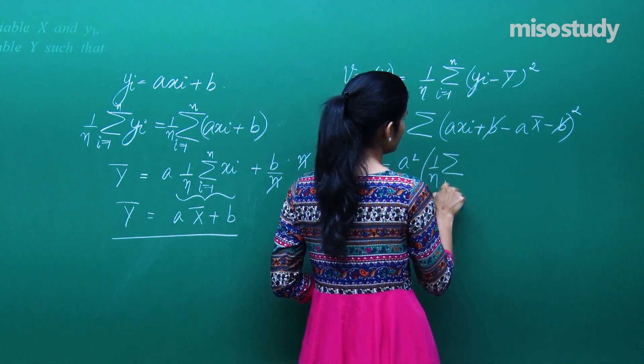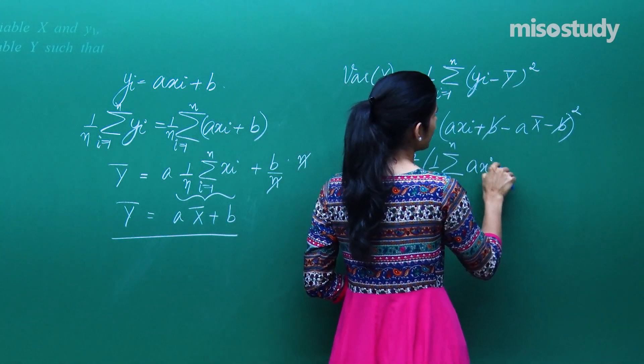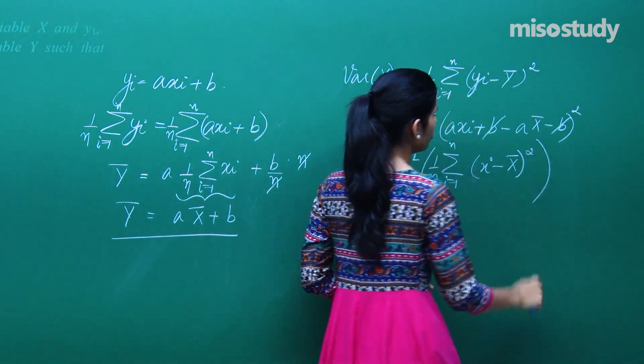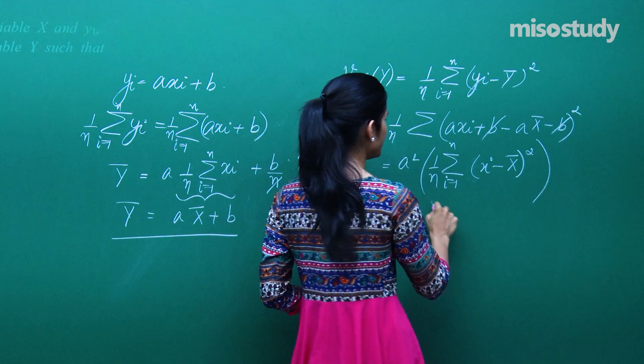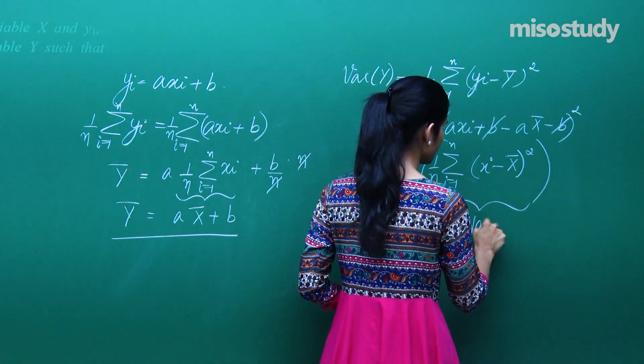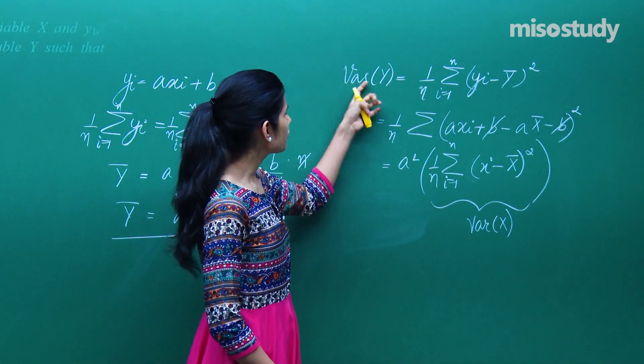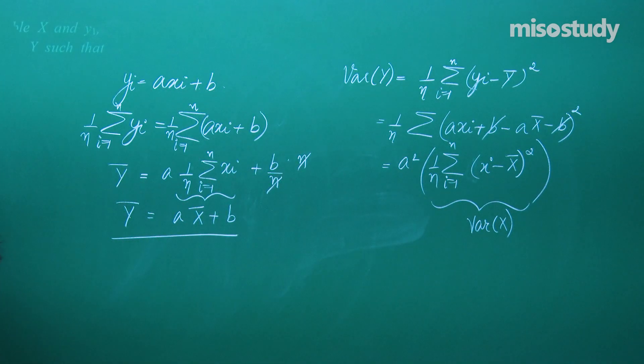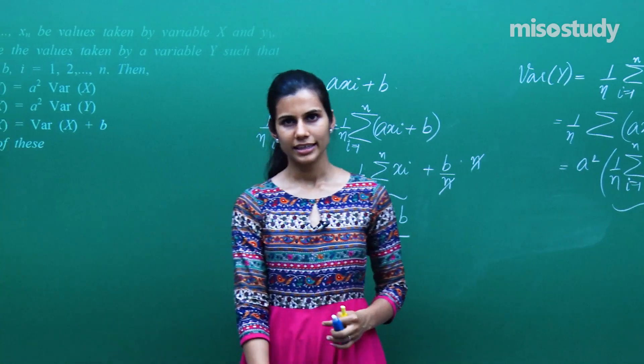Or I should say, xi minus x bar ka whole square. And this is nothing but variance of x. Toh aapko mila hai variance of y is a square times variance of x. Variance of y is a square times variance of capital X.